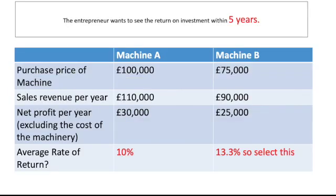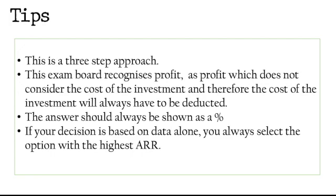We have to select the investment option with the highest average rate of return. And if you only have one option, then read the case study and see what is the objective of the owner — what average rate of return are they hoping to achieve? Because then you can deem that as a success. Remember, it's a three-step approach. The exam board recognizes profit, which does not consider the cost of the investment, so the cost of investment will always have to be deducted in step one. The answer should always be shown as a percentage, and you will always select the option with the highest average rate of return.